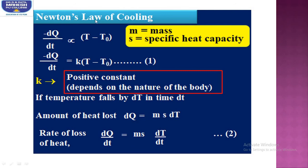Newton's law of cooling states that the rate of heat loss of a body is directly proportional to the difference in the temperatures between the body and its surroundings. Mathematically, we can write it as dQ/dt, that is rate of loss with a negative sign indicating the loss, directly proportional to the difference between the temperature of the body and the surrounding.